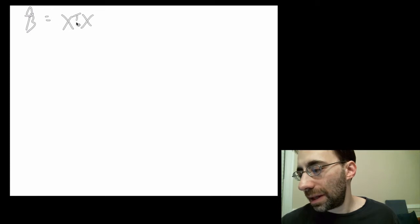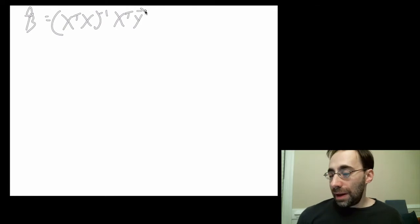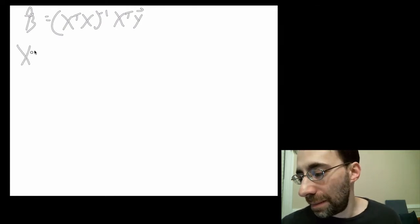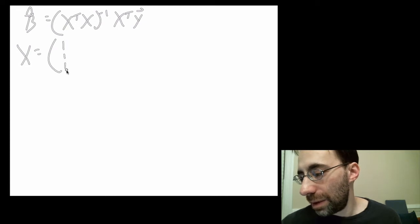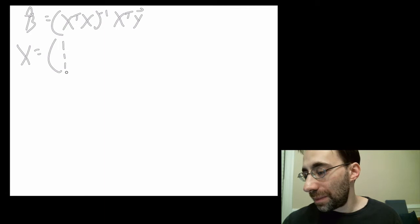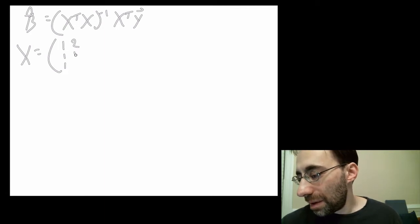We'll start by writing the equation for beta hat vector again. That's X transpose X inverse X transpose y vector. Now we have to have an X, so let's make up an X at random. It's one, one, one. We'll do a three data point X because it makes some of our calculations easier. And we'll make up some numbers here, two, one, three. And then we'll have a y, and we'll just make that one, two, three.